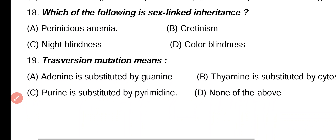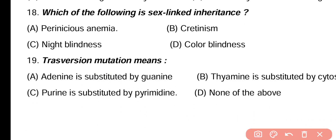Question 18. Which of the following is a sex-linked inheritance: pernicious anemia, cretinism, night blindness, color blindness? The correct answer is color blindness, as it is a sex-linked inherited trait.